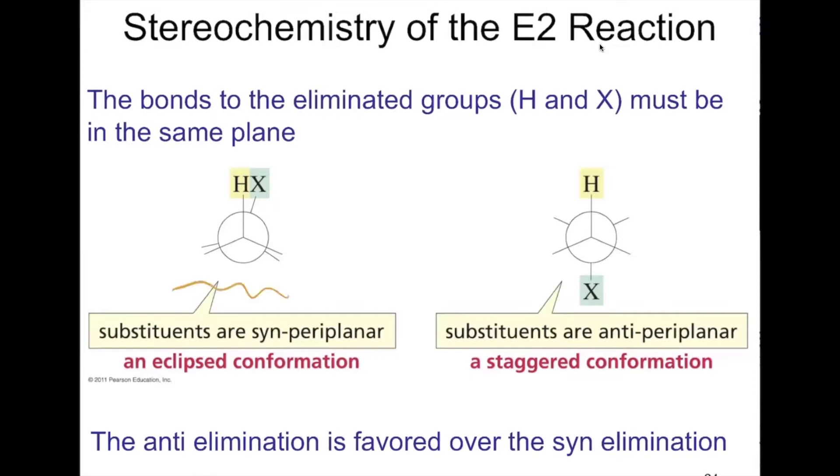Here on the left is a Newman projection of a compound that is periplanar but syn—they're on the same side. The base coming in from the same side as the leaving group is problematic. On the right, we have anti-periplanar, where they're in the same plane. The base can easily pull that proton off at the same time the leaving group leaves while the double bond forms. This anti-periplanar conformation allows elimination to happen.